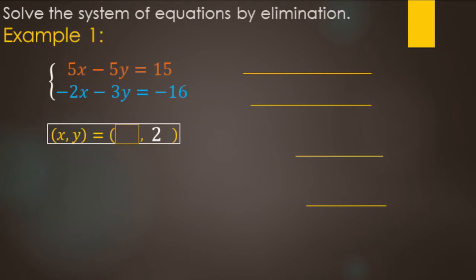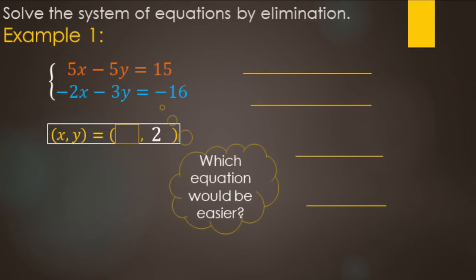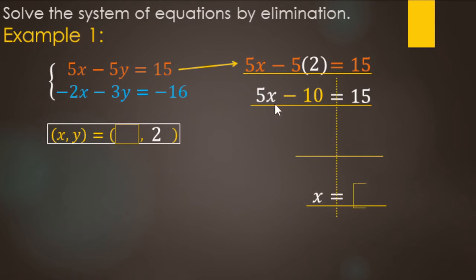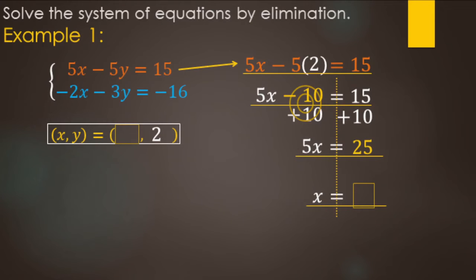To find the other variable, choose the original equation that looks easiest — the top one has fewer negatives. Replace y with 2: 5x minus 5 times 2 is minus 10, equals 15. To solve this two-step equation, undo minus 10 with plus 10 on both sides: 5x equals 25. Divide both sides by 5: x equals 5. So the ordered pair that makes both equations true — the solution — is (5, 2).